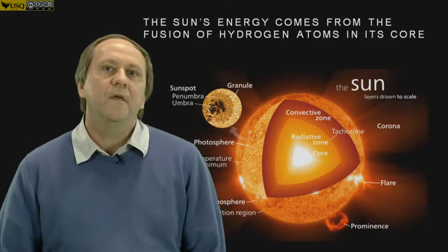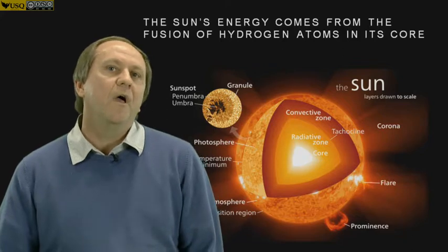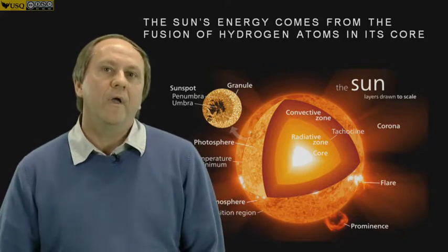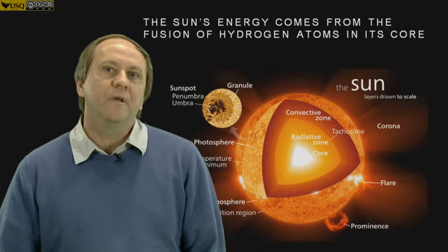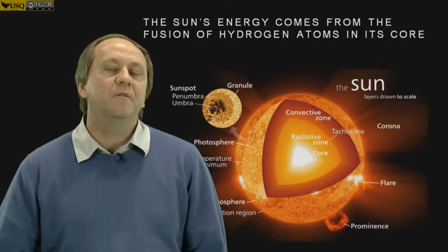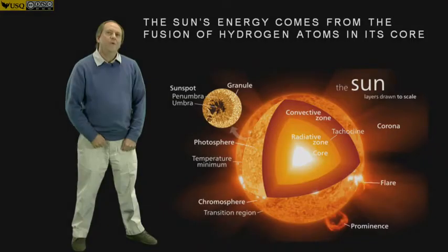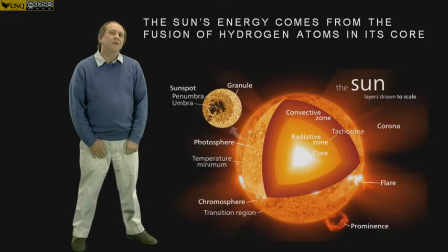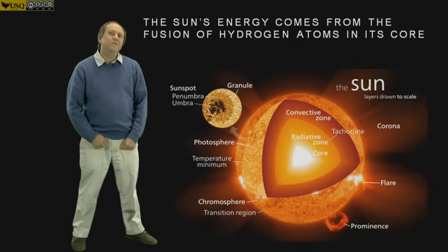The Sun shines because of the fusion of hydrogen atoms in its core, and that releases so much energy that we get more than enough energy for the Sun to shine for millions and in fact billions of years. We now think we understand exactly how the Sun shines through a process of nuclear fusion.